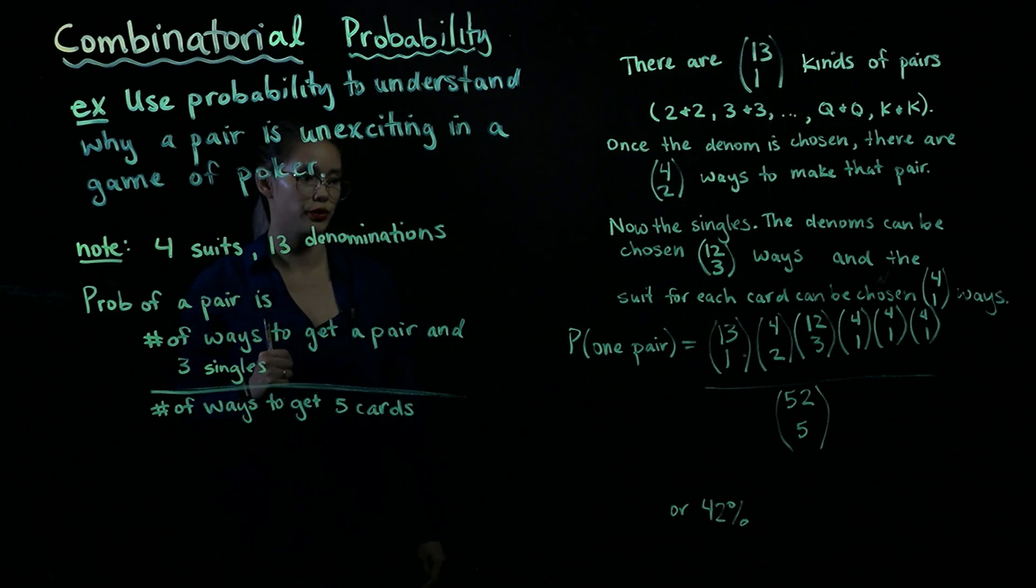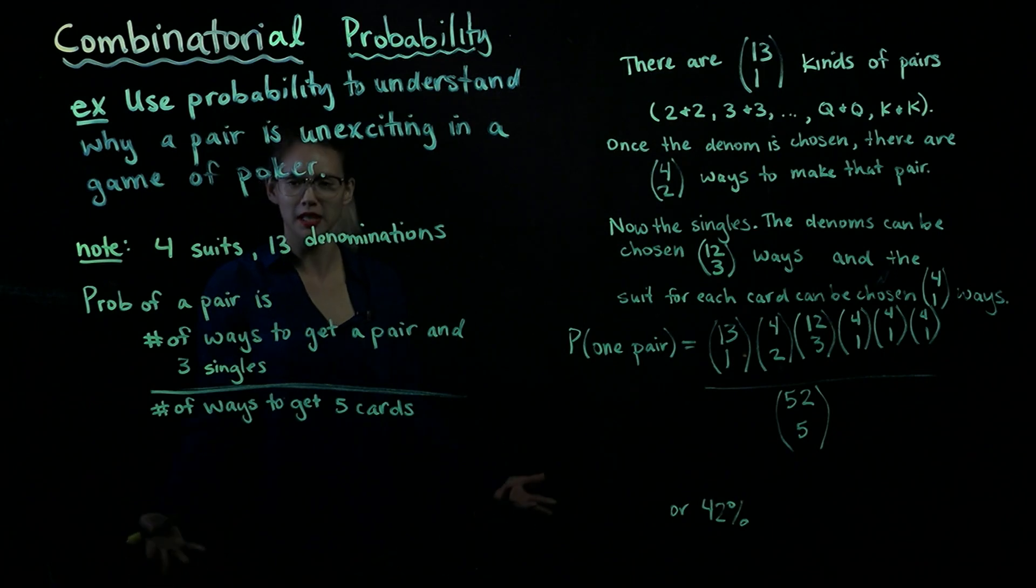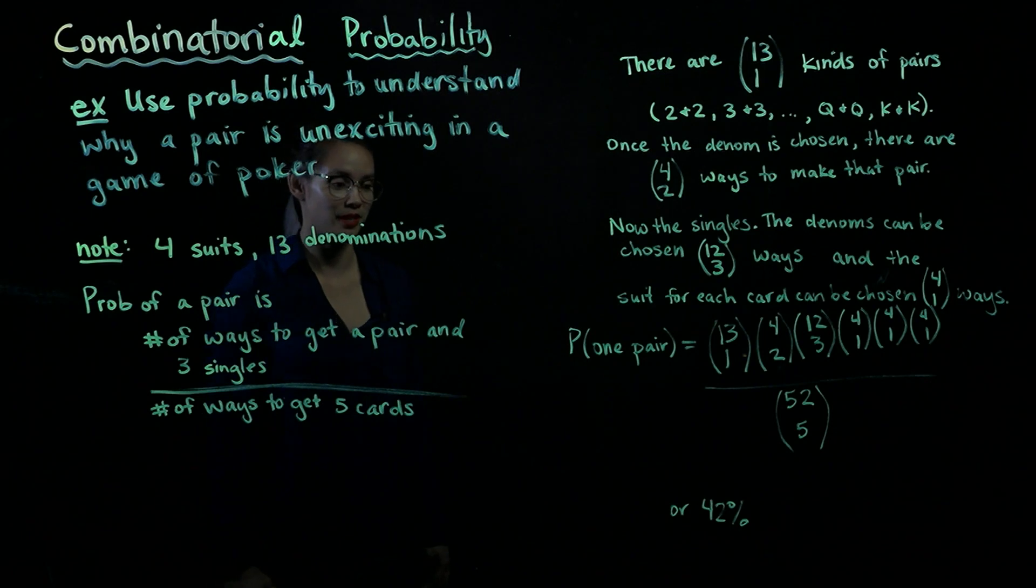So we get about 42% is the probability of getting a pair. That's relatively high, especially if you would go and calculate something more exciting like a full house. This kind of makes sense why in a poker game a pair is not worth very much.